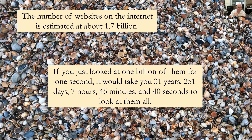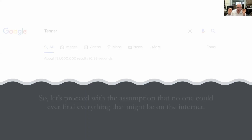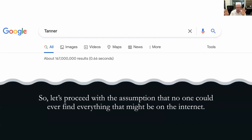Nobody is going to be able to do that. So we need to have tools that help us sift through all that vast amount of information. Let's proceed with the assumption that no one could ever find everything that might be on the internet, and it's not going to help to think in terms of being exhaustive. For example, I did a search on Google for 'Tanner' and got 167 million results in 0.66 seconds.